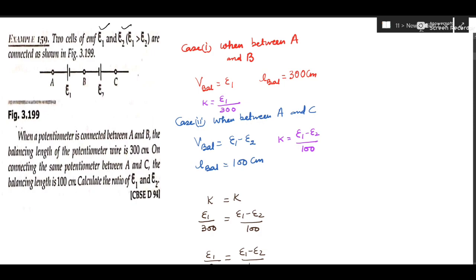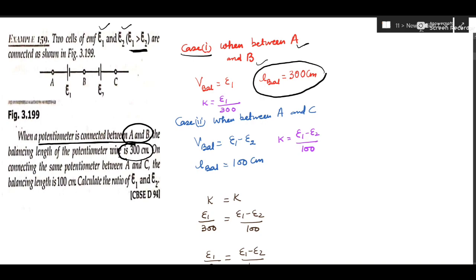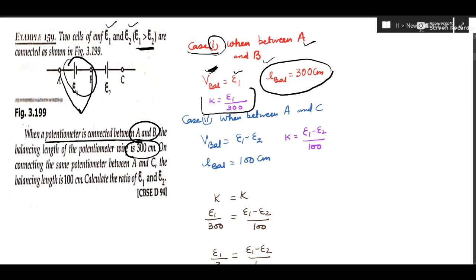Two cells of EMF E1 and E2, with E1 greater than E2, are connected as shown in the figure. When the potentiometer is connected between A and B, the balancing length is 300 centimeter. In case 1, when connected between A and B, only E1 is in consideration, so V_balanced = E1. Therefore K = E1 / 300 cm.